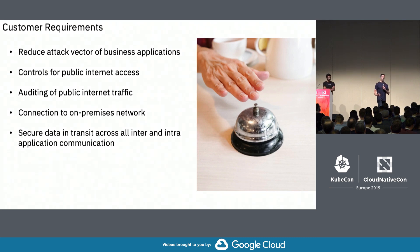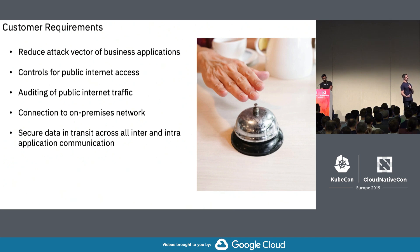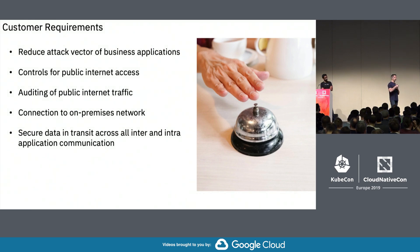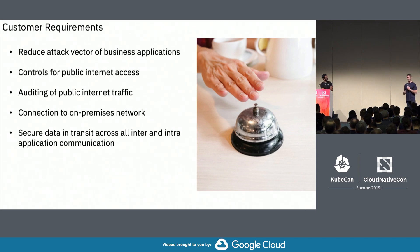Connection back to on-premises network is always a key aspect if you're not born on the cloud — which most of the customers we deal with are not. Many of them have workloads already on-premises, and you want to connect back to those securely and in a controlled fashion. And then secure communication of your data — data in transit both between clusters, between services, and within the cluster itself, pod to pod. How do I ensure encrypted communication between all my pods?